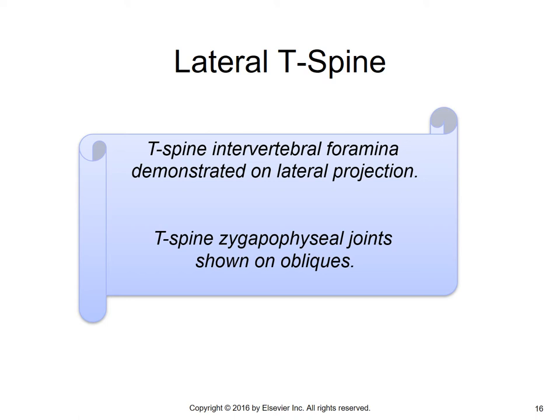For the lateral T-spine, the intervertebral foraminae are demonstrated on the lateral projection. T-spine zygapophyseal joints are shown on the obliques. I want to draw your attention to page 371 of Merrill's, 13th edition — Table 8-1, which is crucial for you to memorize. All of the information on Table 8-1 will be on the registry.